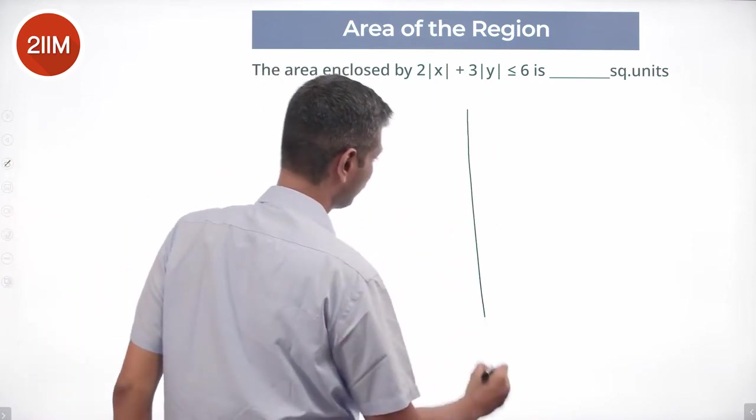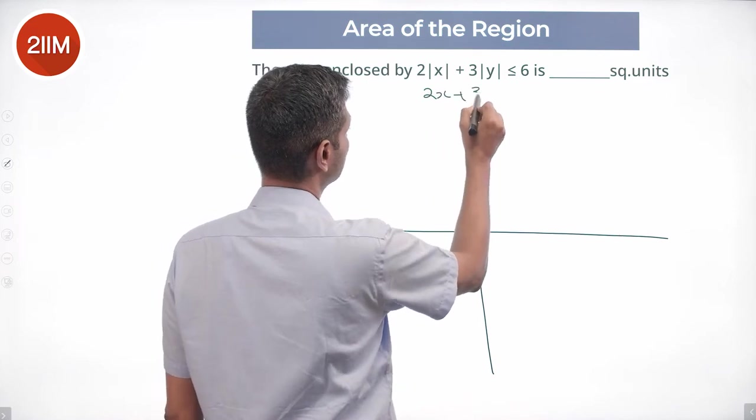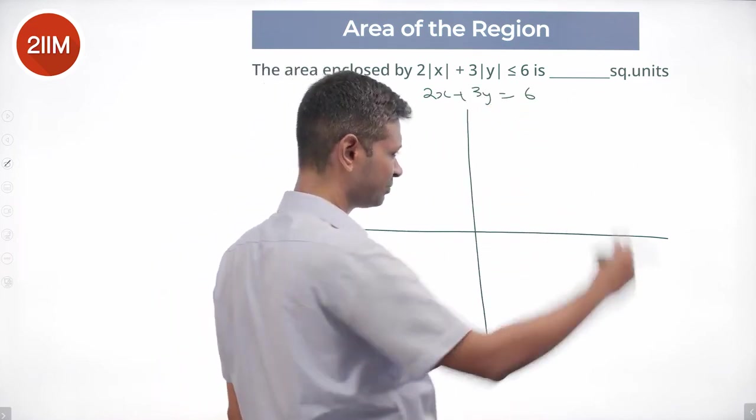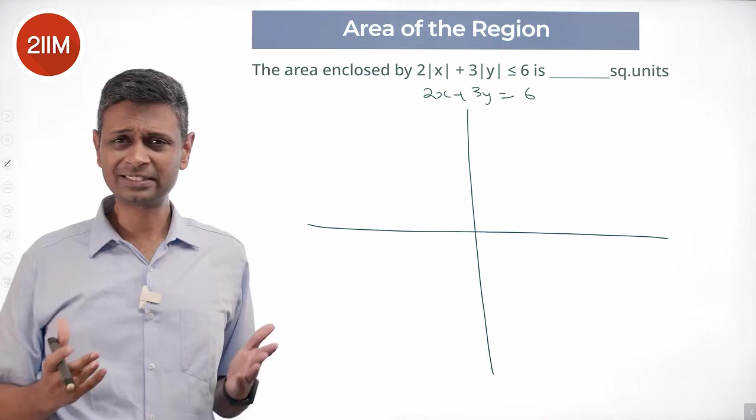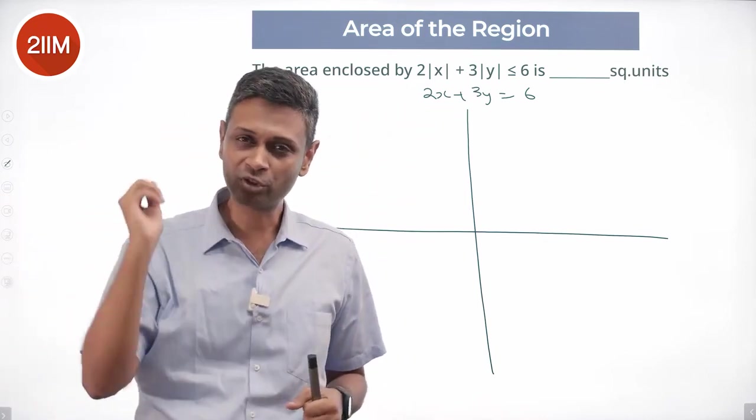I draw x-axis, y-axis, then I think about 2x plus 3y equals 6. I understand this. I want to think of it as 2x plus 3y equals 6 when x is positive, y is positive.